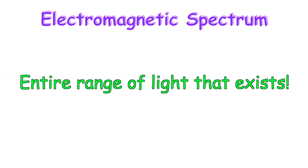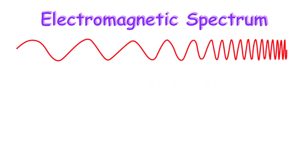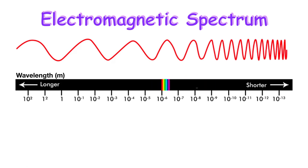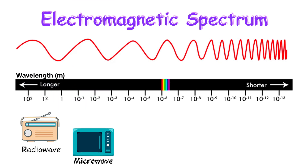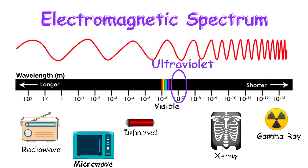To explore the word ultraviolet scientifically, we have to look at the electromagnetic spectrum, which describes the entire range of light that exists. Light is an electromagnetic wave. From the longest to the shortest wavelength, they are classified as radio wave, microwave, infrared, visible light, ultraviolet, x-ray, and gamma ray.